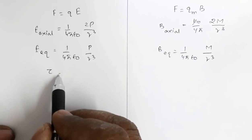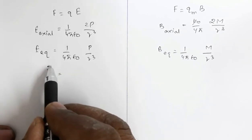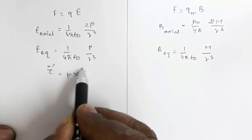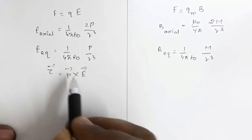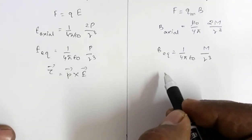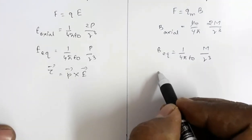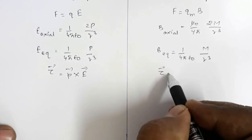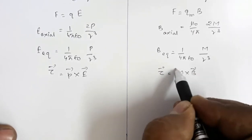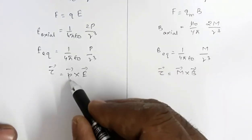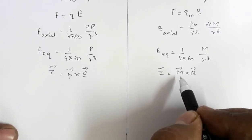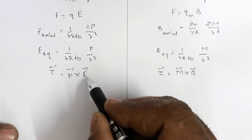The torque on a dipole in an electric field is τ = P × E, where P is the electric dipole moment and E is the electric field strength. The analogous expression in magnetism is τ = M × B, where the electric dipole moment P is replaced by M and E is replaced by B.